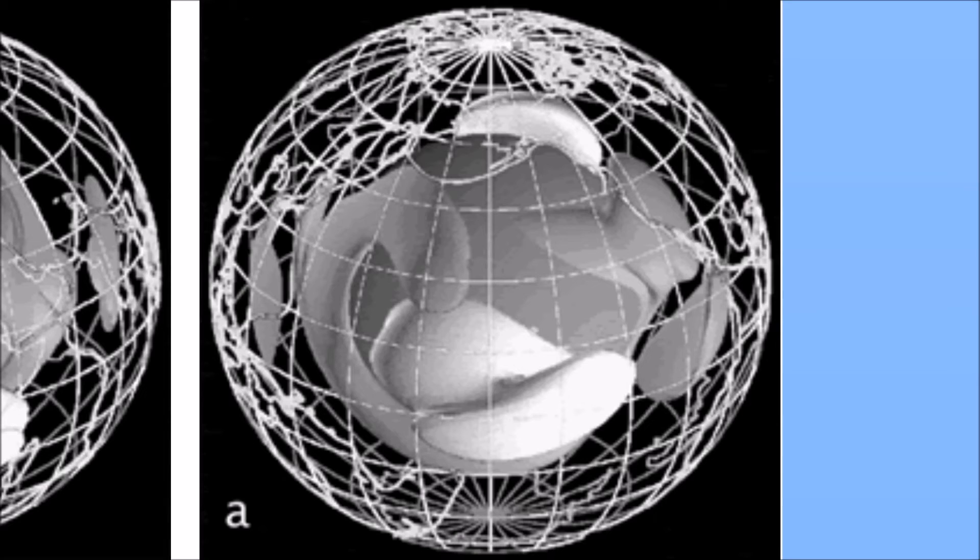These are cold blobs that are sitting underneath the Pacific Ocean. These are massive tectonic plate-sized objects, which are 300 degrees cooler than the surrounding mantle.